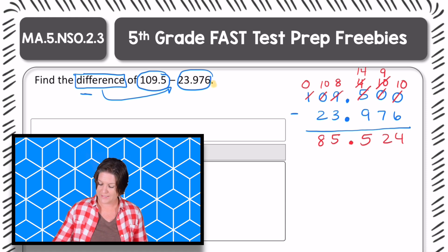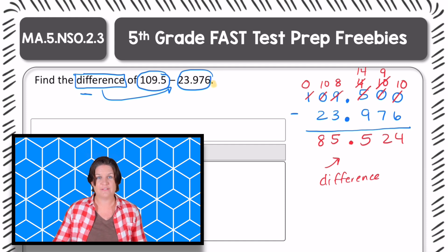And zero hundreds minus nothing is nothing. So my answer, my difference or our difference is 85.524.